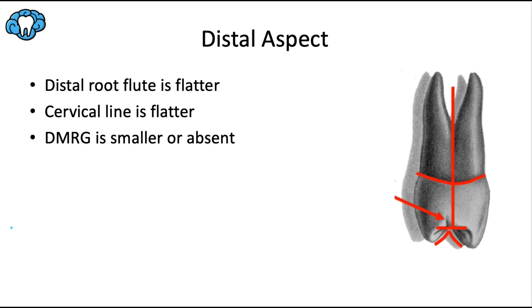On the distal aspect, a couple of things are different from what we've seen. The distal root flute is not deeper than the mesial one — in fact it's flatter, with very little root fluting at all. The cervical line is flatter, which is a universal trait. The distal marginal ridge groove is much smaller than the mesial one, or it may be absent entirely, leaving just a flat marginal ridge with no grooves.